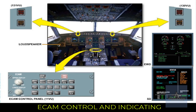The System Display, SD, is divided into two areas. The upper part is used to display the various system pages and diagrams of the aircraft systems. The lower part is used to display permanent data. Below the EECOM displays, on the center pedestal, there is the EECOM control panel. The two control knobs on the left-hand side are used to adjust the brightness of the two EECOM screens and to turn them off. The push buttons on the right-hand side are mainly used to display any of the system pages or the status page, or to clear or recall a warning or caution message.